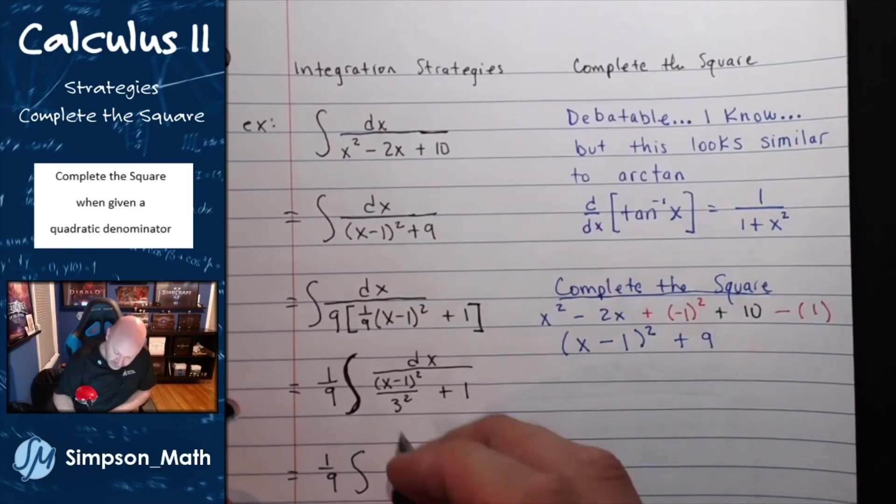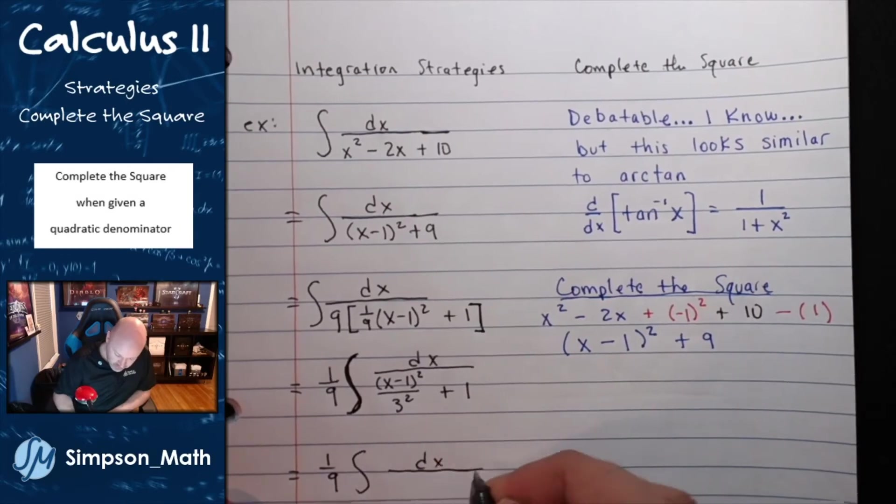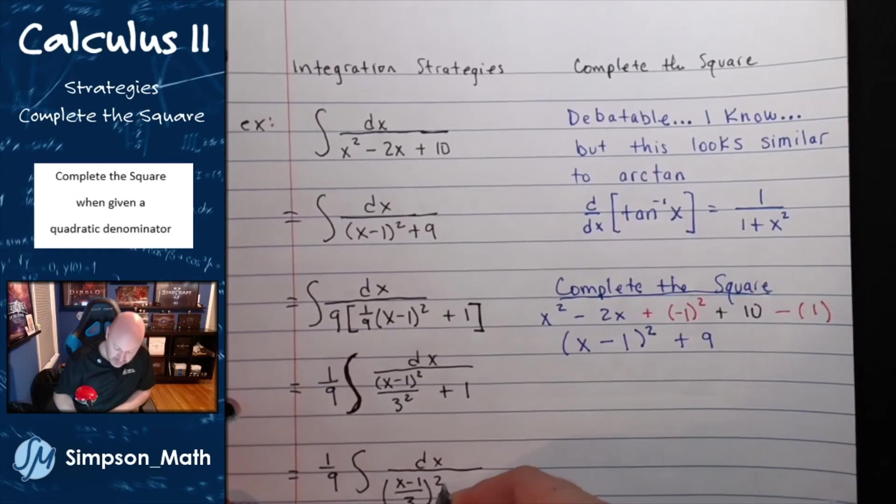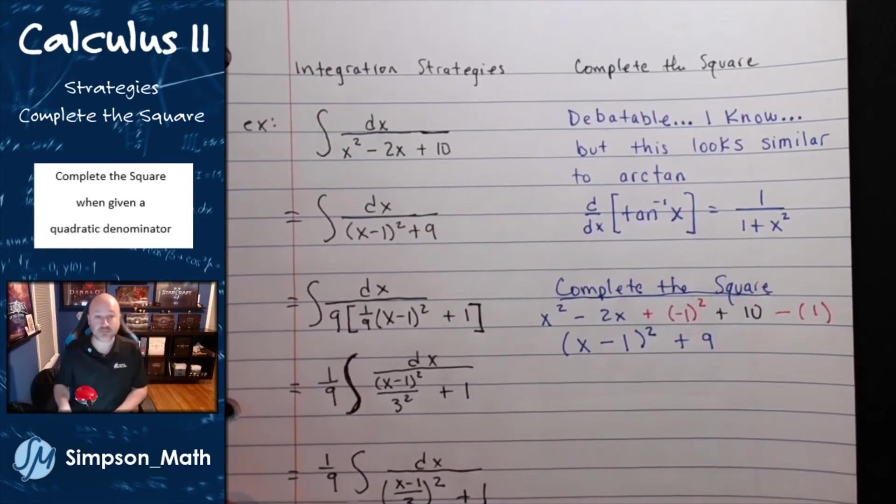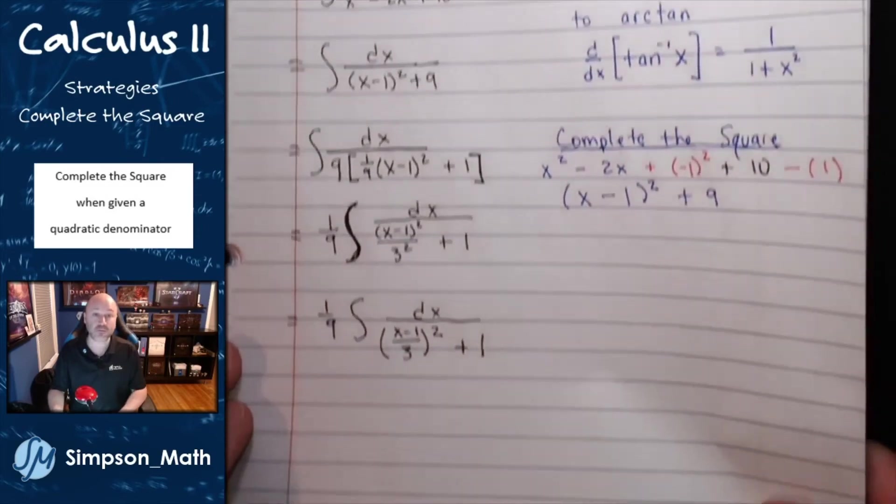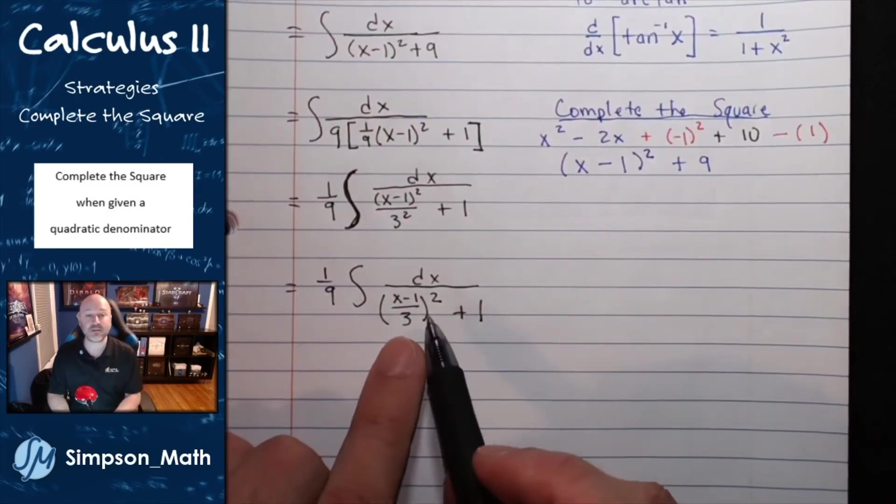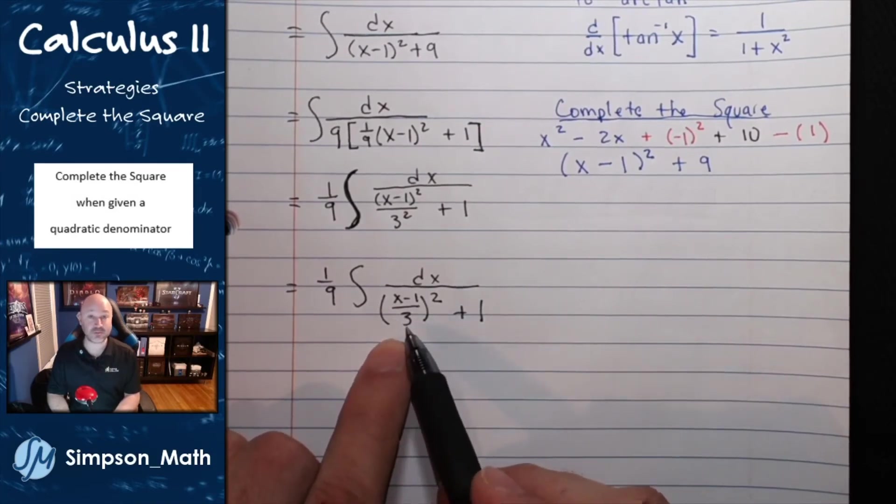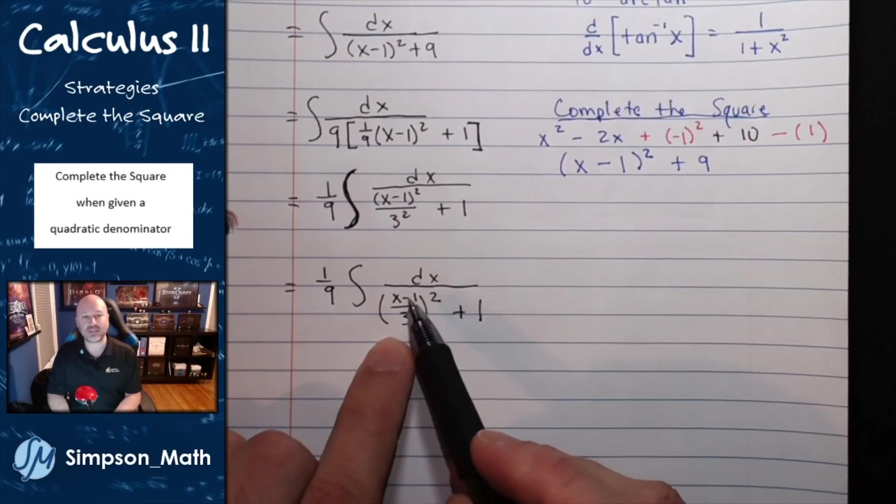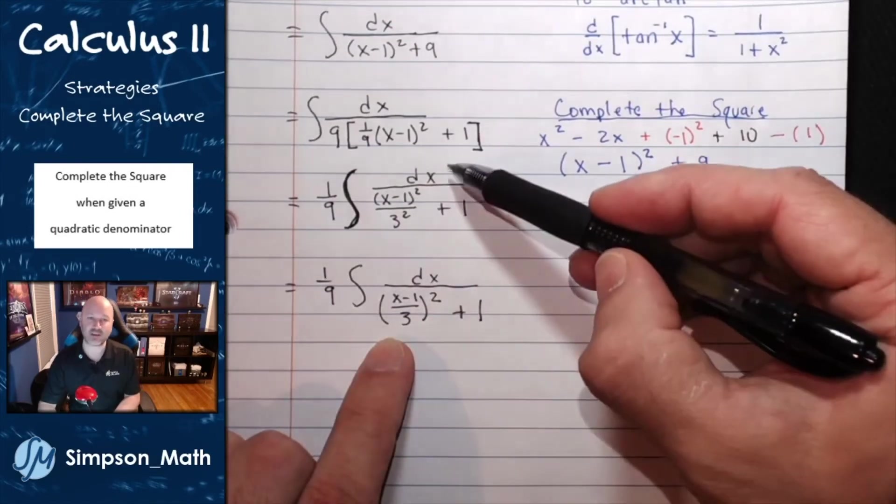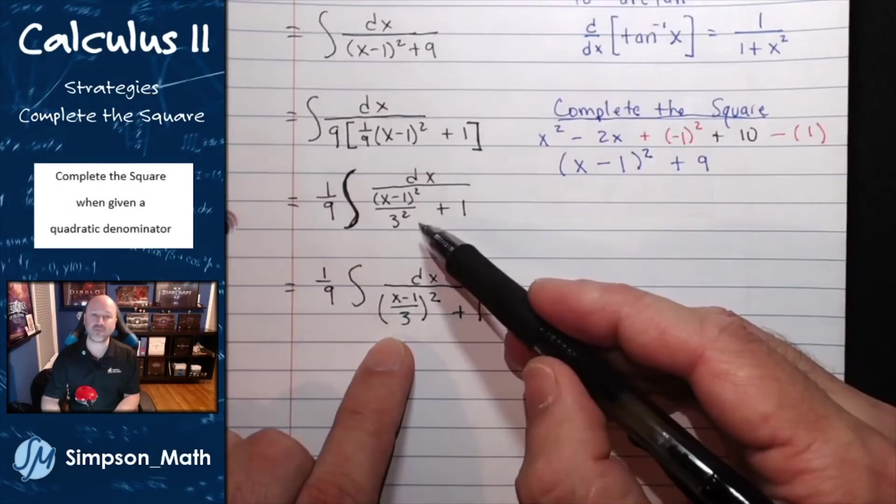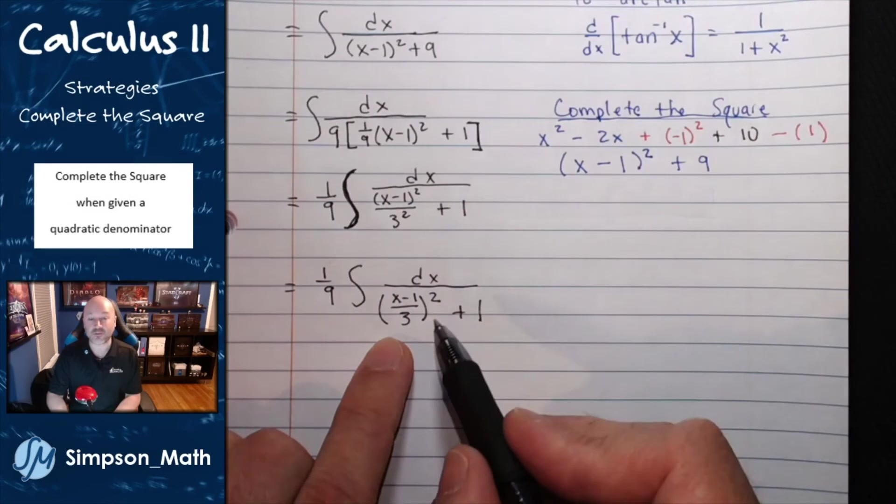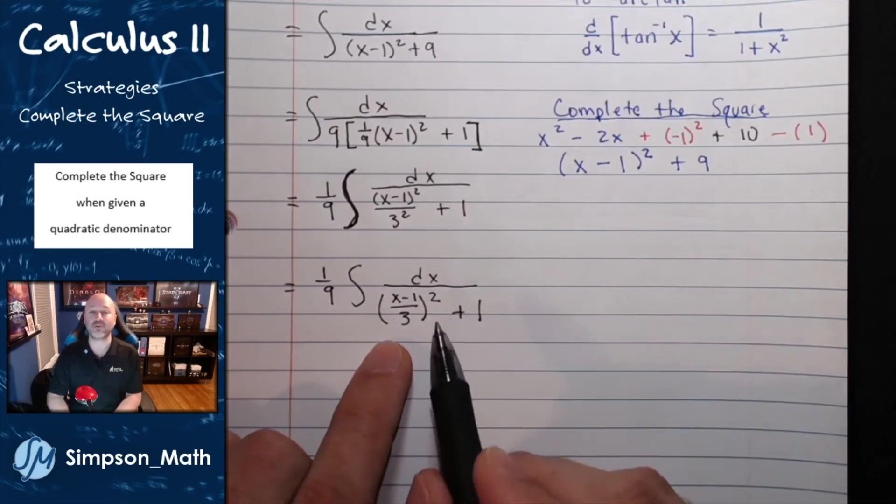Then if you have a numerator and a denominator being raised to a power, you can write that as the whole fraction being raised to that power. So I'm going to do this one more time. Rewrite. 1 ninth times the integral of this thing: x minus 1 over 3 all being squared plus 1. Just to make sure that makes sense. If you have this fraction being squared, that simply means you take the fraction and multiply it times itself. So x minus 1 times x minus 1 is x minus 1 squared. And 3 times 3 is 3 squared. So this is just rewriting what it looks like. But in this form, I think I'm ready for u substitution.